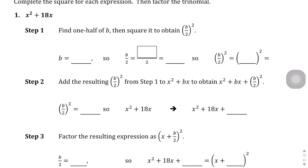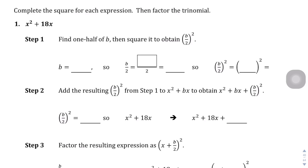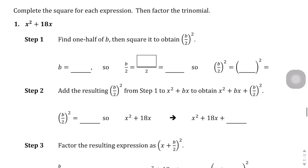Let's jump into the problem and learn the procedure. We want to learn the basics of what it means to complete the square. In this problem, x squared plus 18x, we have two terms — an A and a B. We don't have a C term, so we're going to create a C term almost out of thin air.